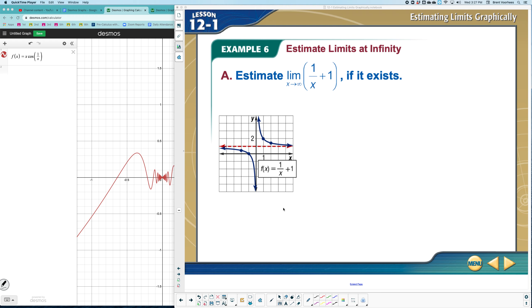So it says, estimate the limit as X approaches infinity of 1 over X plus 1 plus 1. Okay, so this is not looking for both sides. It's only looking for as you approach the right here. As we go further and further to the right.